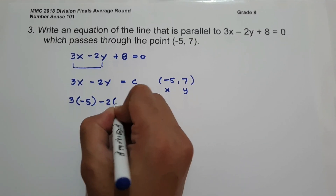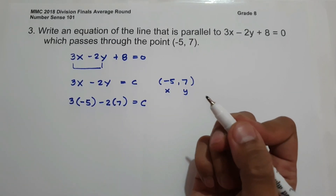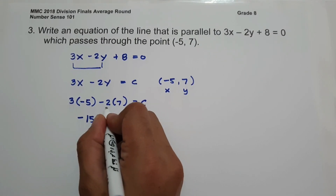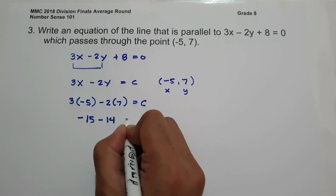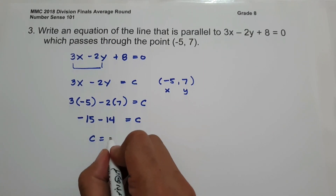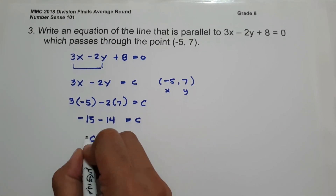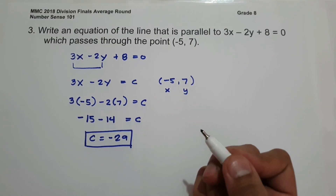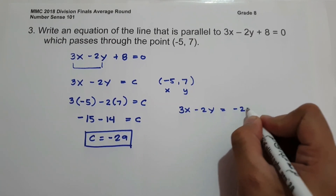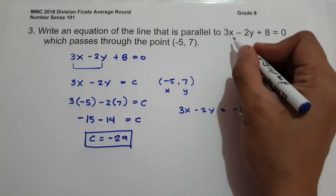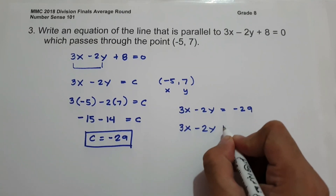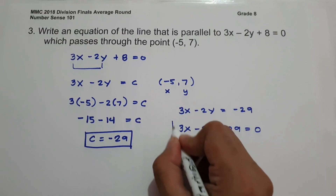We have 3 times negative 5, minus 2 times 7, equals c. So 3 times negative 5 is negative 15, and negative 2 times 7 is negative 14, equals c. So the value of c is negative 15 minus 14, that is negative 29. Since we have 3x minus 2y equals negative 29, let us write this in the form of ax plus by plus c equals 0, and that is 3x minus 2y plus 29 equals 0. This will be our answer.